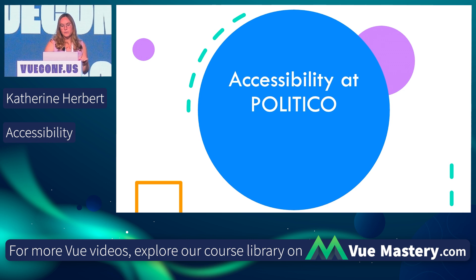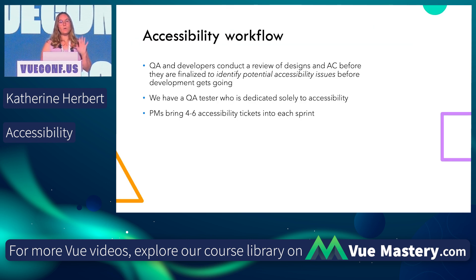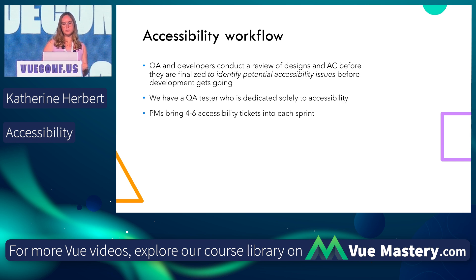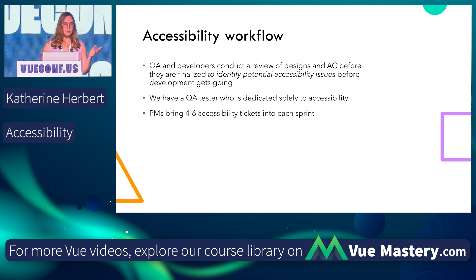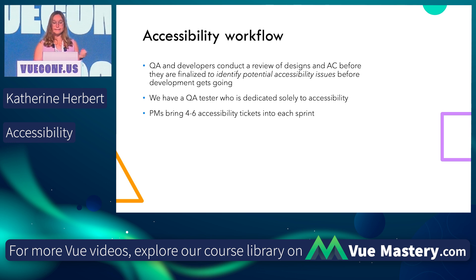A little bit about how we do accessibility at Politico. We have a dedicated QA team. The QA team and developers get together while we're refining tickets and designs, and we'll identify things that might not be the most accessible — 'can you go back and tweak this design or this acceptance criteria?' — so that we can try to overcome those issues before we even start developing. It just saves everybody time, and no one likes changing requirements in the middle of the software development lifecycle.